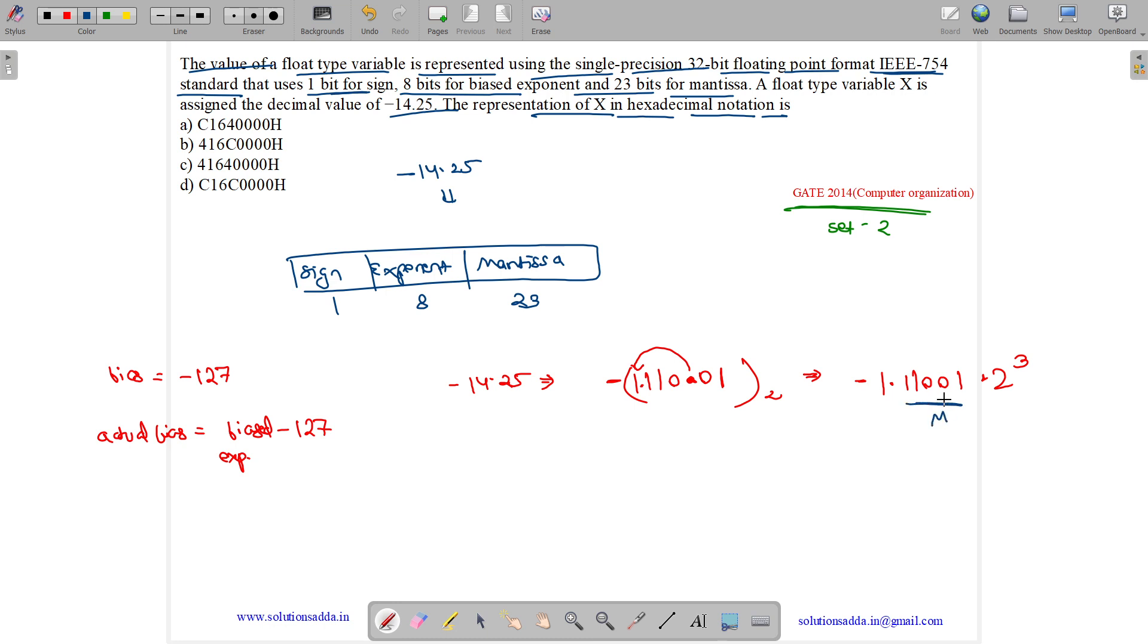What is our exponent? So exponent is 3. But we need to add our bias to it. So bias is 127, which is 01111111.